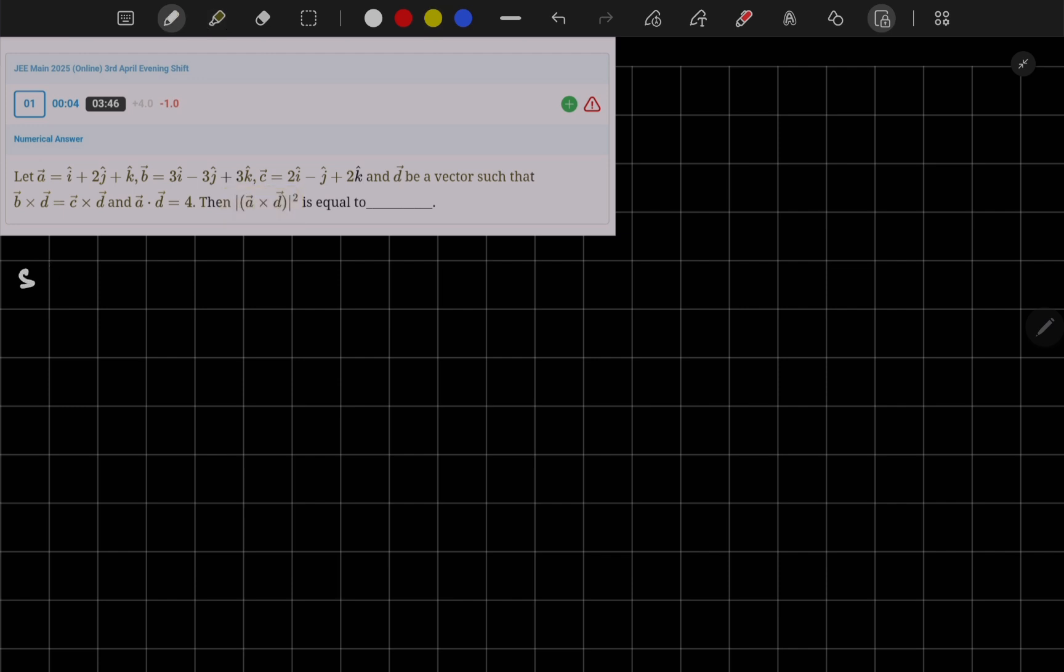Now let me solve this question. First of all, let me read the given data. A vector is 1, 2, 1 and B vector is 3, minus 3, and plus 3 and C vector is 2, minus 1, 2.